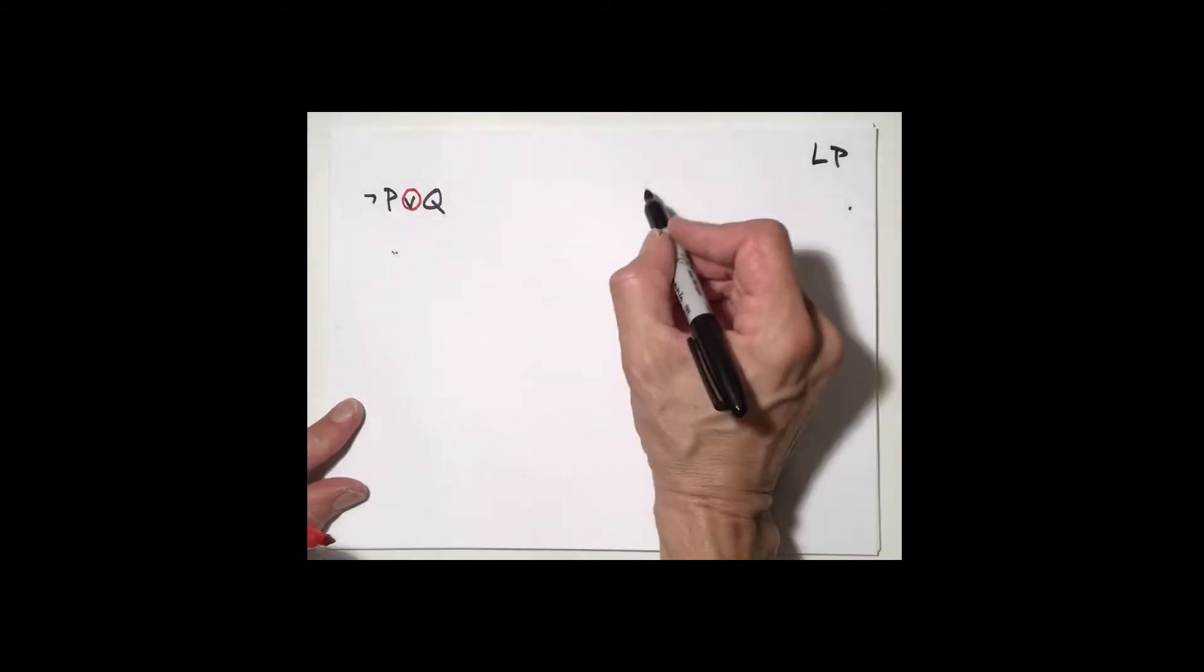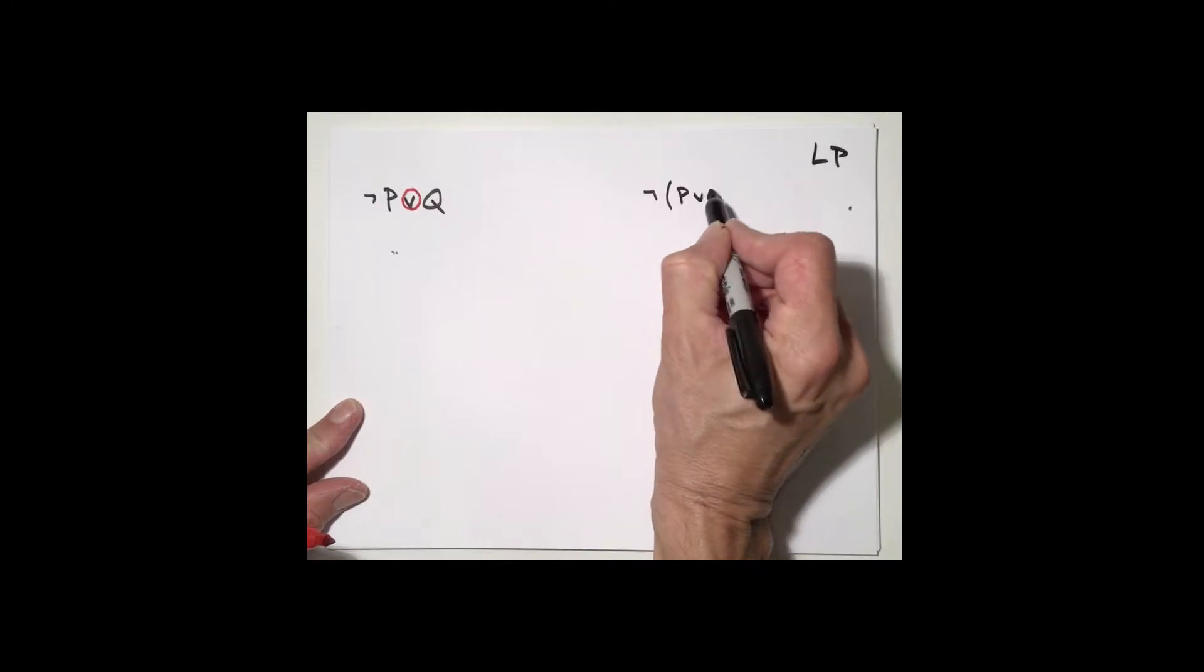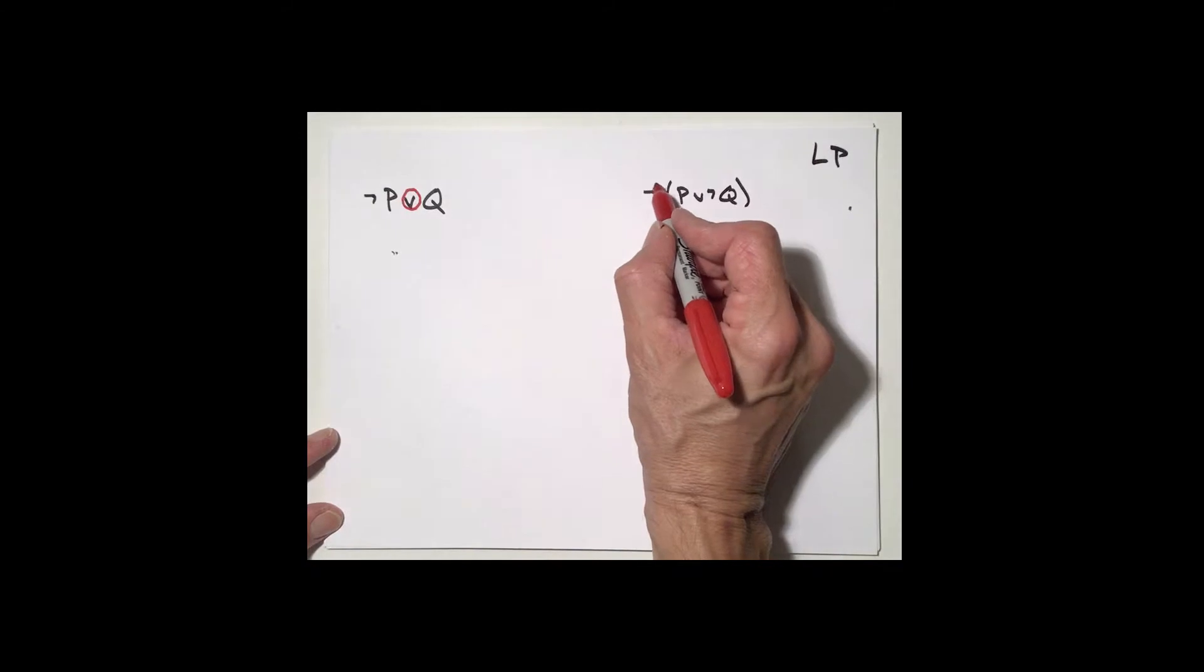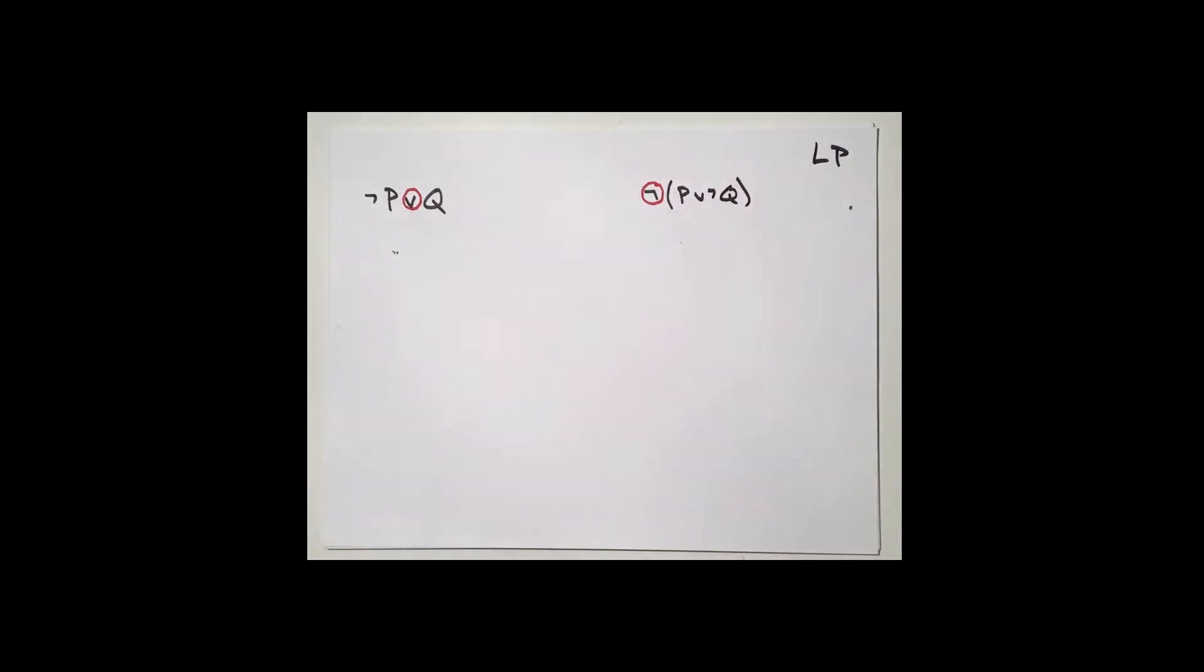On the other hand, if I write down something like this, not P or not Q, you know that the main logical connective is the negation that's out here on the left.